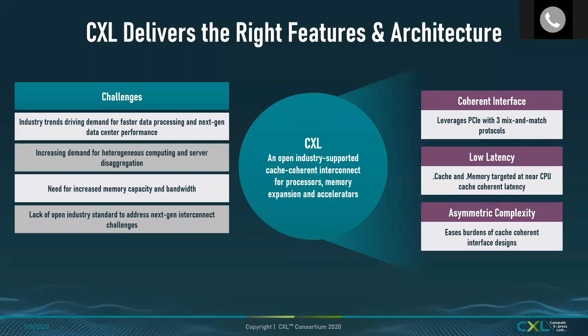CXL addresses industry challenges including the need for faster processing in next-gen data centers, heterogeneous computing, and increased memory capacity and bandwidth. A year ago there was no unified open specification for this. CXL brings a coherent interface that mixes and matches three protocols: .io, which is a packetized version of PCIe, and .cache and .mem, which bring cache coherency between accelerators and CXL-attached devices.